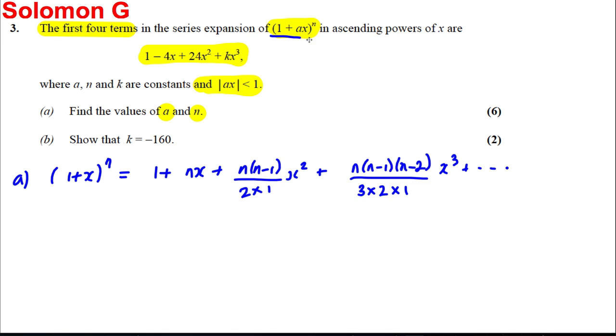Now in our case, we're actually doing 1 plus AX. So what would 1 plus AX to the power of N be? It would be 1 plus N AX plus N(N minus 1) over 2. This would be AX squared, so that would be A squared X squared plus N(N minus 1)(N minus 2) over 6, and it would be A cubed X cubed.